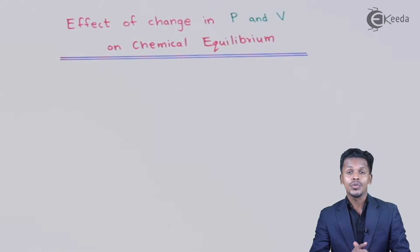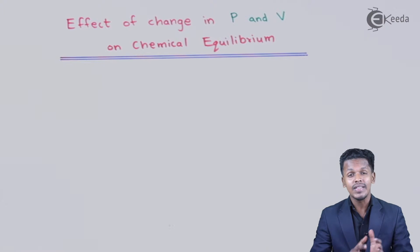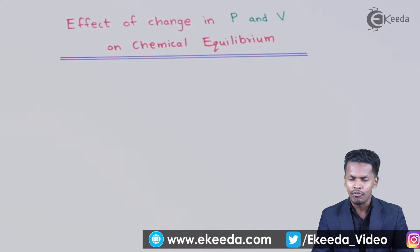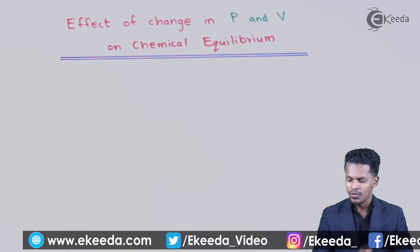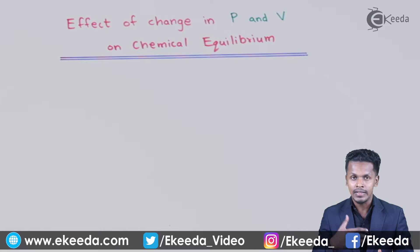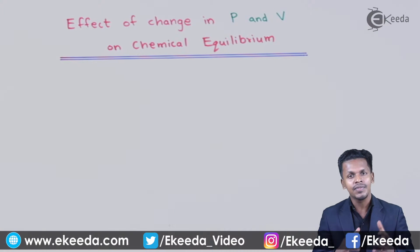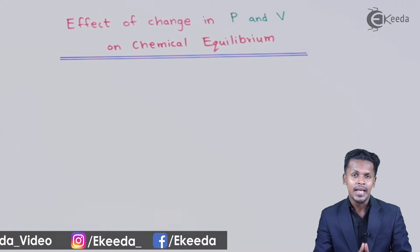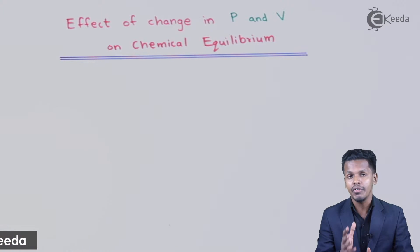So here we are now going to talk about what is the effect of pressure as well as volume on a particular reaction that is exhibiting chemical equilibrium. If we increase the pressure or increase the volume, obviously the forward reaction or the backward reaction can be obtained when a particular reaction is in equilibrium, but there is a certain condition.